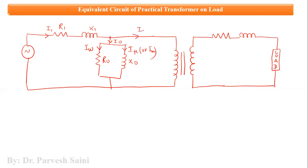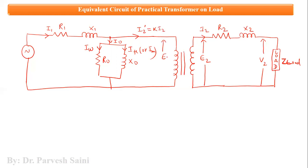In this equivalent circuit, the secondary current is i2, secondary resistance is r2, secondary reactance is x2, load voltage is v2, load impedance is ZL, EMF induced in the secondary is e2, EMF induced in the primary is e1, and the input voltage is v1 equal to Vm1 sin-theta. This is the complete equivalent circuit of the practical transformer on load.